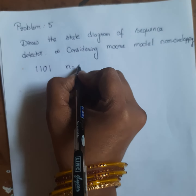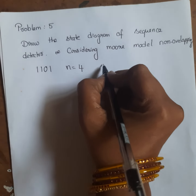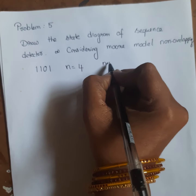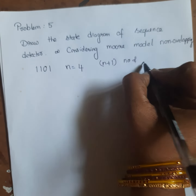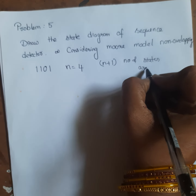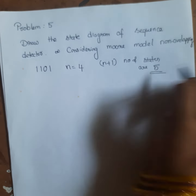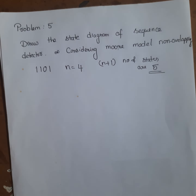The number of bits are 4. In the Moore model, the number of states are n plus 1. So here the number of states are 5 — that is 4 plus 1 equals 5.